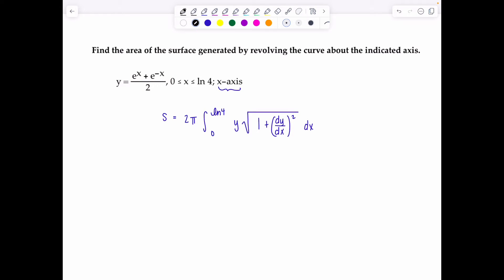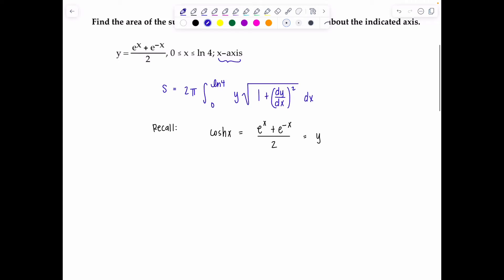Just if you'll recall, hyperbolic cosine, which we lovingly refer to as cosh x, is equal to e to the x plus e to the negative x over 2, which is what y is equal to for this particular problem. So let's proceed and use some hyperbolics instead, because it will make the calculations a lot cleaner.